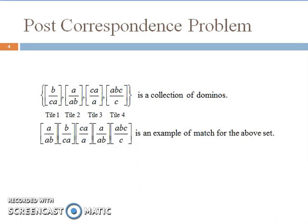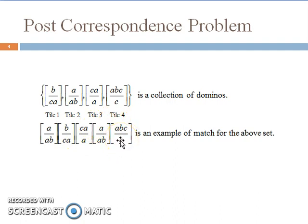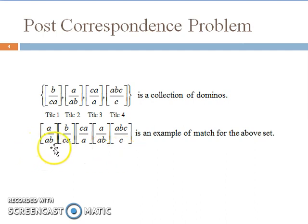Now if we arrange the tiles in the order of tile 2 first, followed by 1, followed by 3, followed by 2, and followed by 4, then the sequence formed from the top elements is A, B, C, A, A, A, B, C. And the sequence formed by the elements at the bottom of each tile is also A, B, C, A, A, A, B, C. The sequence on top and the sequence at the bottom match, so a solution is found.